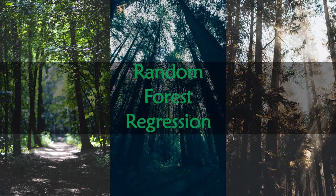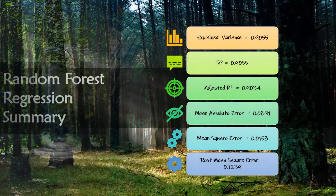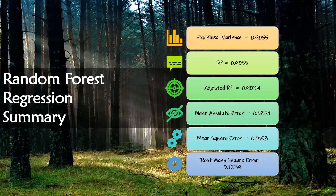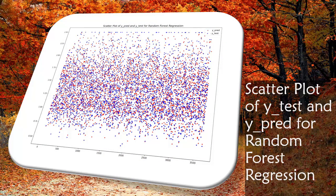Coming to our very final model and that is the random forest regression. The random forest regression yields an R² of 0.9055 which is way better than the multiple linear regression and the decision tree regression. So we can clearly say that the random forest regression has a very good fit to our data. The figure here shows the scatter plot of y_test and y_predicted for random forest regression.